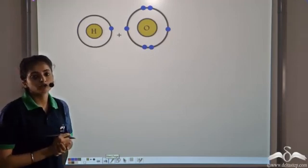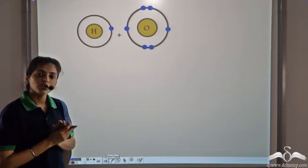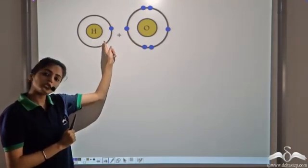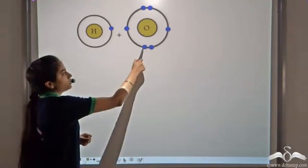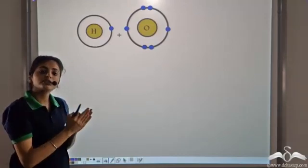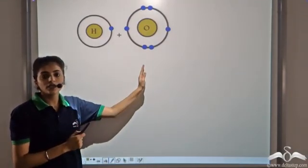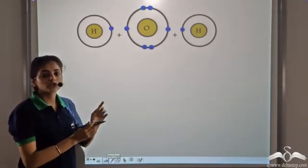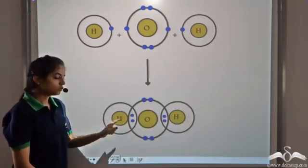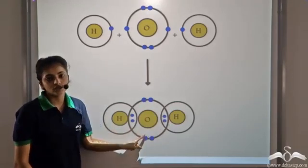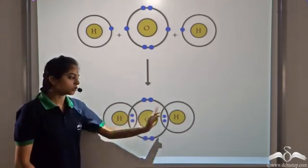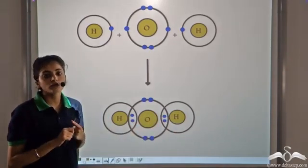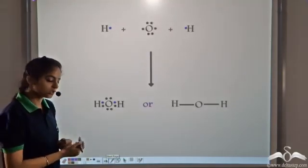Let's take another example — how is water formed? Water is a compound of hydrogen and oxygen. If one hydrogen atom shares one electron with oxygen, hydrogen gets the duplet structure, but oxygen will only have seven electrons and is still short of one. So oxygen further shares one electron with another hydrogen atom. In order to satisfy the octet rule, oxygen shares electrons with two hydrogen atoms. Now both hydrogen atoms have the duplet structure and oxygen has the octet structure.